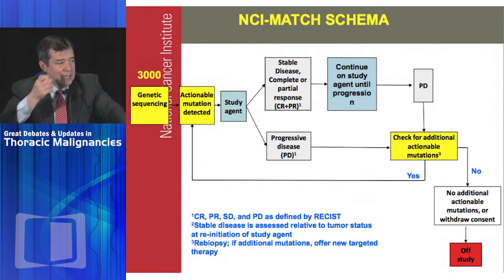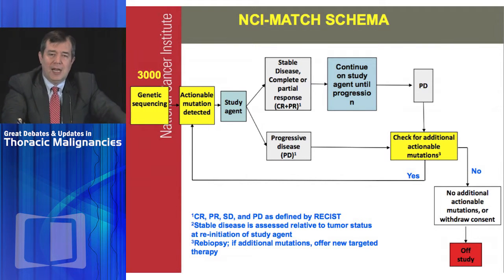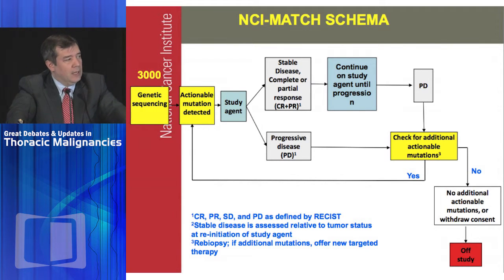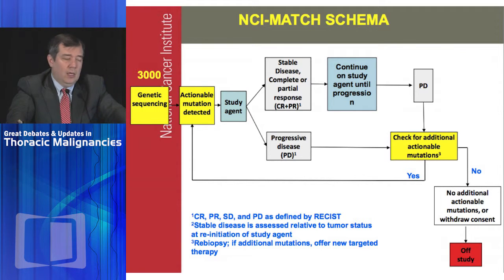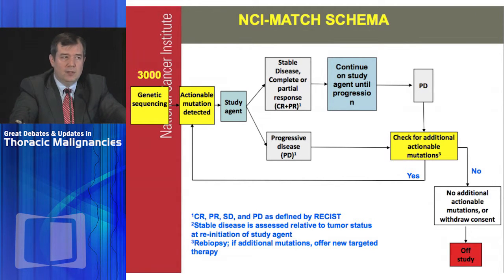The NCI MATCH schema is a little different — more like a basket than an umbrella trial because it doesn't aim to find something for everybody. What it does is perform genetic screening for a large population of patients and then provides baskets for individual mutations.